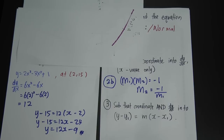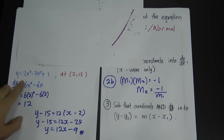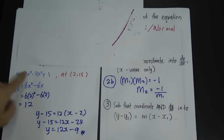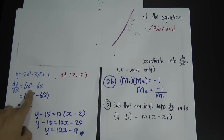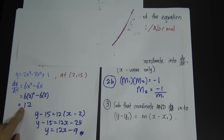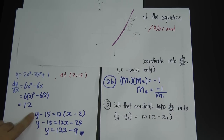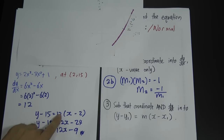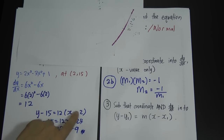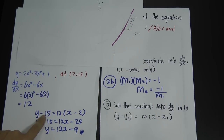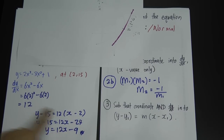If the question gives you the equation passing through coordinate 2 and 15 and asks you to find the equation of tangent, the steps are the same. First dy/dx, then substitute 2 into dy/dx to get the gradient value, then substitute the gradient and the coordinate into y minus y1 equals m times x minus x1 — substitute 15 into y1, 2 into x1, and 12 into m.